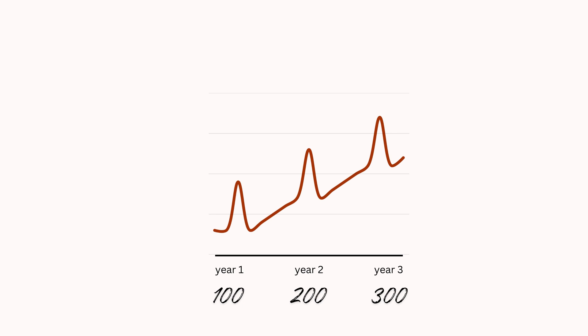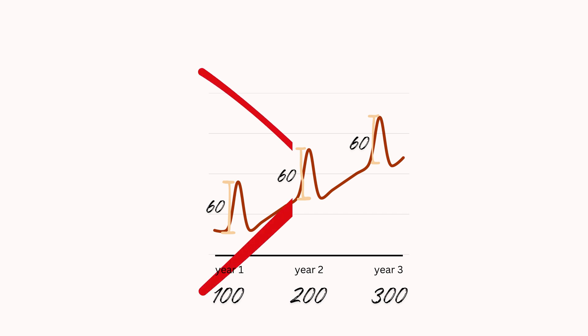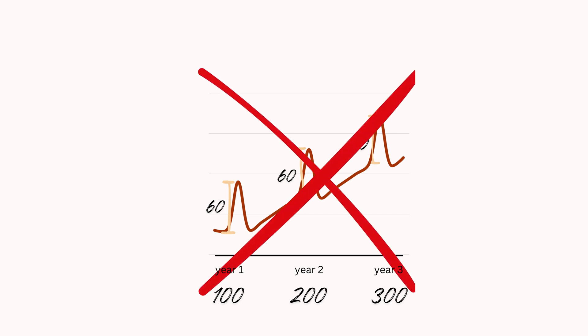In year one we had 100 total customers and 60 of those came in during the winter months. In year three we had 300 total customers and still 60 of them came in during the winter months. Wouldn't we expect this number to be higher? And we're right — this data is really weird. Something must have gone wrong in measuring our sales.